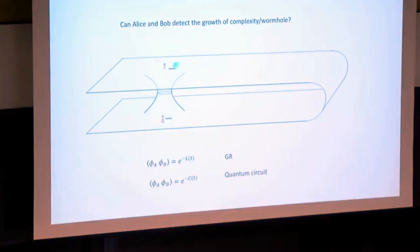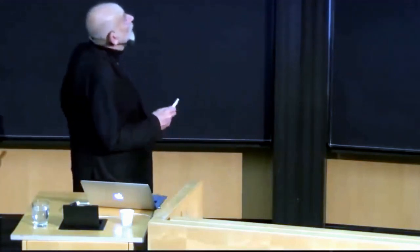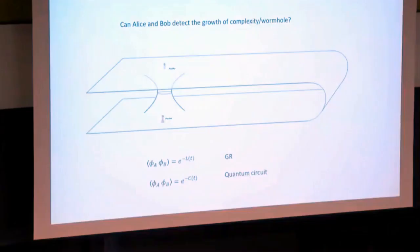Because the wormhole is there, the correlation between Alice's and Bob's measurements is large. On the other hand, because the wormhole grows with time and they separate, that correlation will get smaller and smaller. L here is the distance through the wormhole between Alice and Bob, and that's the way we expect the correlation between Alice and Bob to decrease.